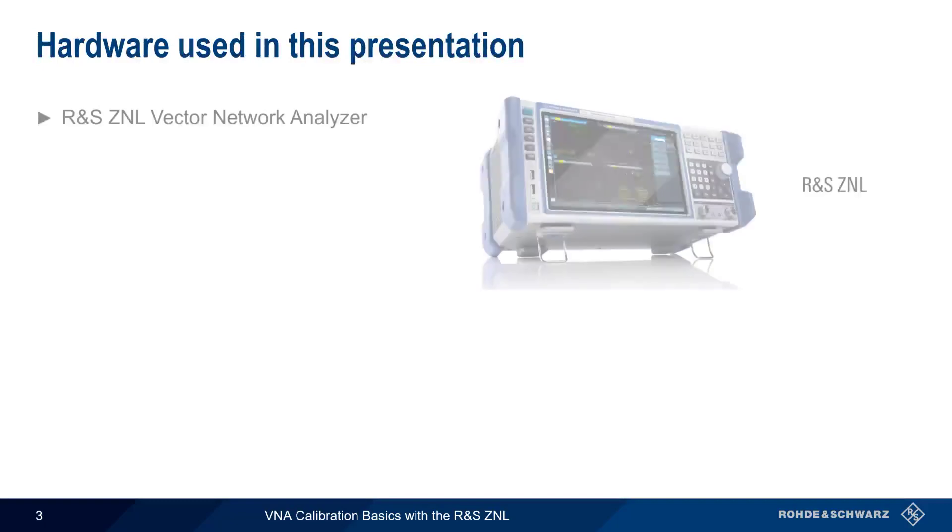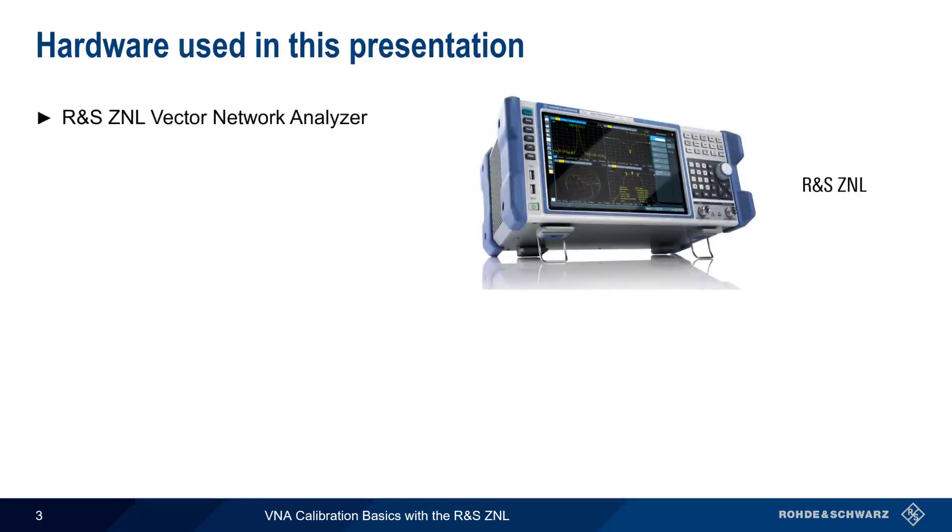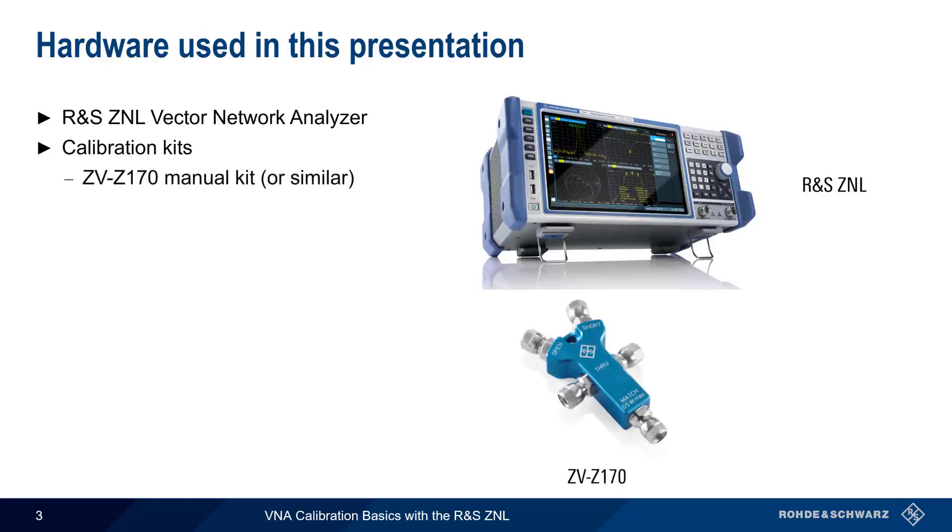In this presentation, we'll be using a Rohde & Schwarz ZNL series vector network analyzer. We'll also explain how to perform calibration using both a manual and an automatic calibration kit. For the manual kit, we'll be showing the ZVZ170, and for automatic calibration, we'll be using the ZNZ151 unit.